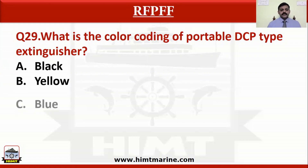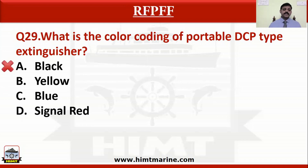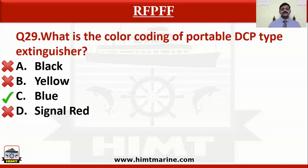Question number 29: What is the colour coding of portable DCP type extinguisher? Option A black, option B yellow, option C blue, option D signal red. Black is for CO2, yellow is for foam, signal red is for water. The correct answer is blue — DCP has blue colour coding.